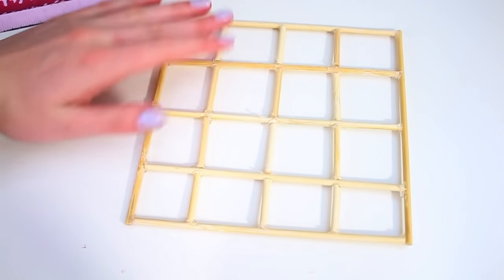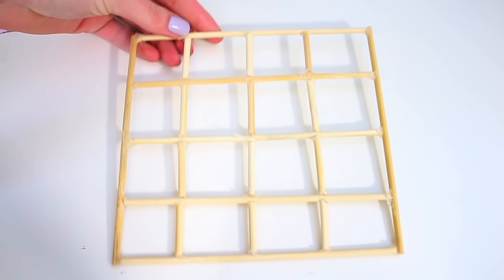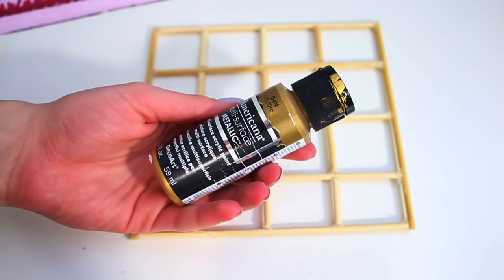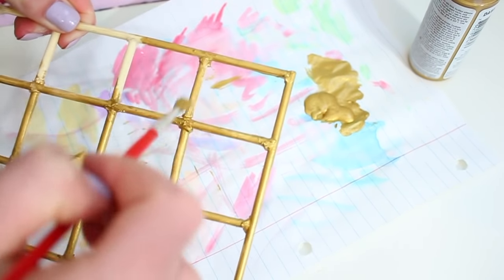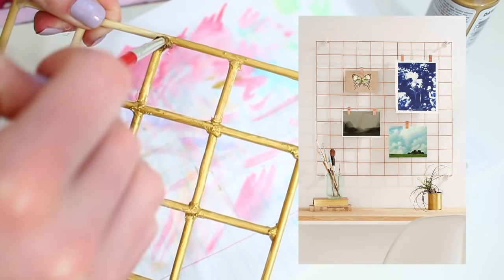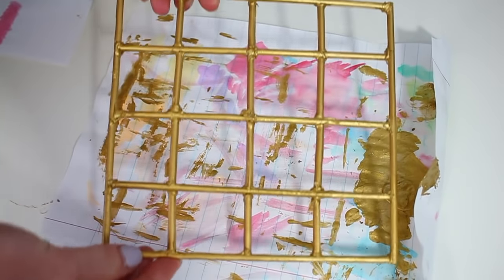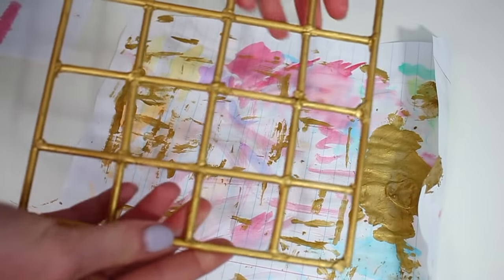So once you're done with your grid, you can just begin painting it. So I used some gold paint. You can also use black, silver, or white, or any other color you want. But those are like the main ones that these grids usually come in for people. So I just painted mine gold with a couple coats. And that is it.